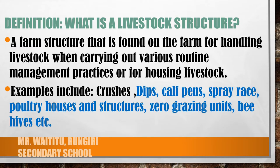Examples include, but are not limited to, crushes, dips, calf pens, spray races, poultry houses and structures, zero grazing units, beehives, etc.